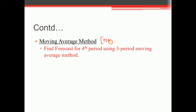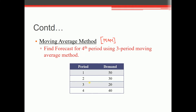Find the forecast for the fifth period using the three-period moving average method. Data is given for four periods, and we want the forecast for the fifth period. In this method, you take the latest three data points — these are the most recent three values from the dataset.